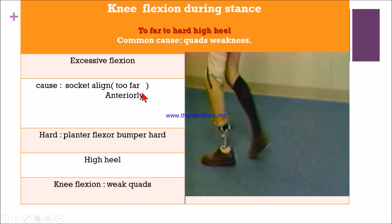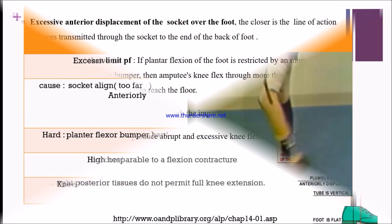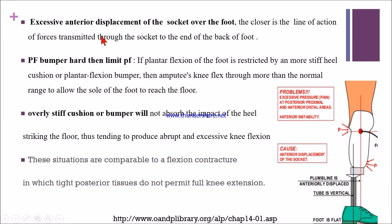In this gait, we can notice that due to the anteriorly aligned socket, the patient is having excessive knee flexion during stance phase. In this diagram we can see that the excessive anterior displacement of the socket — the plumb line is correct, but the line of action is posterior to the foot, so the forces are transmitted through the socket to the end and back of the foot.